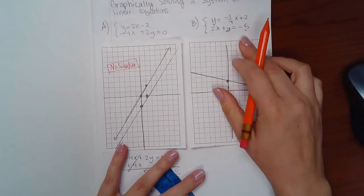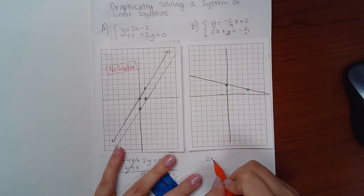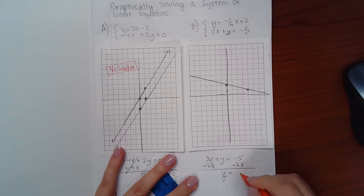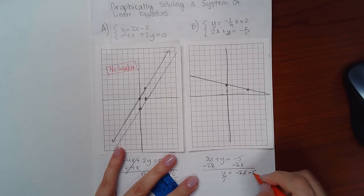That's this one. The bottom equation, we do have to manipulate a little bit. So we do have to minus 2x on both sides. We get y equals negative 2x and negative 5.